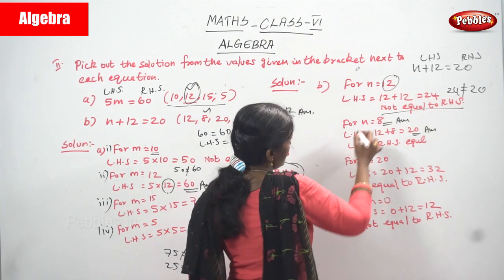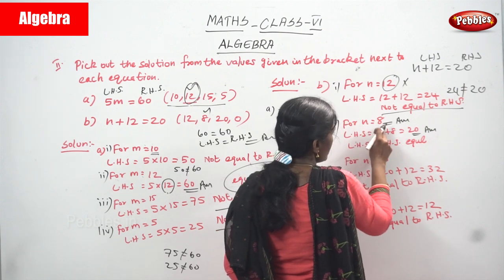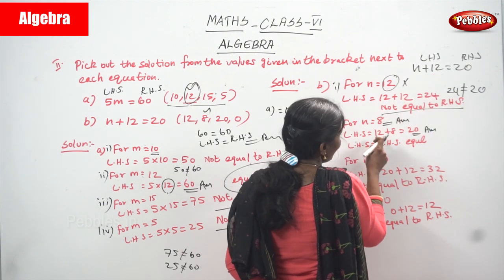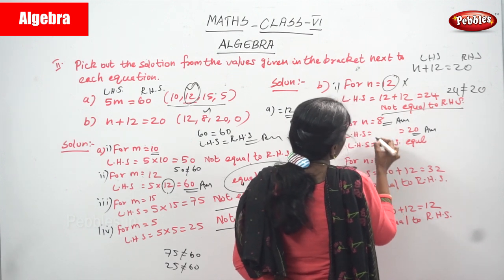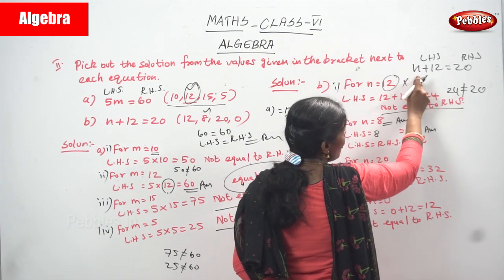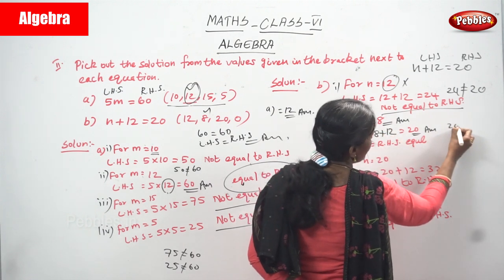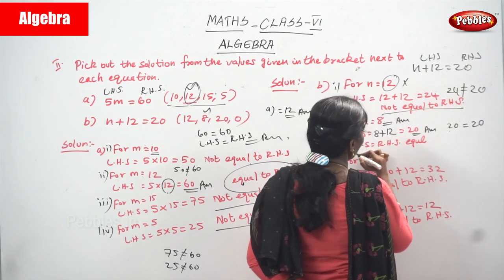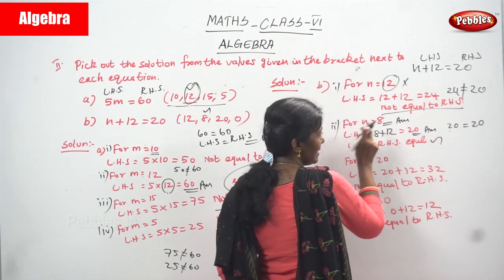The first option is a wrong solution. For the second option, n equal to 8: LHS is n plus 12. Substituting n equal to 8, we get 8 plus 12, which equals 20. The left hand side answer is 20 and the right hand side is also 20, so 20 equals 20 — left hand side equals right hand side.